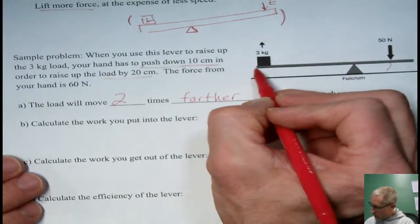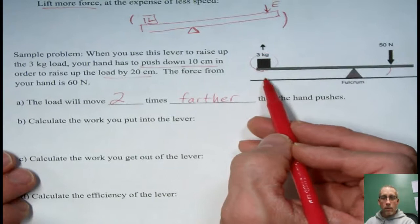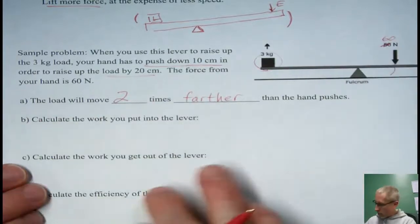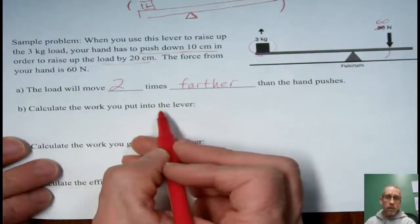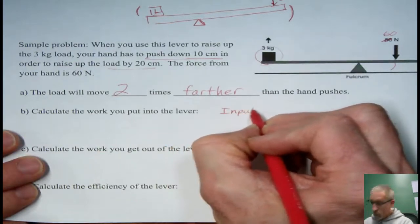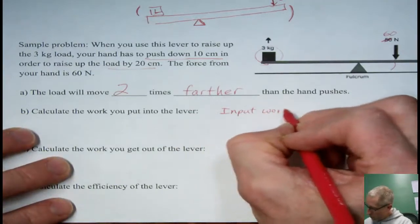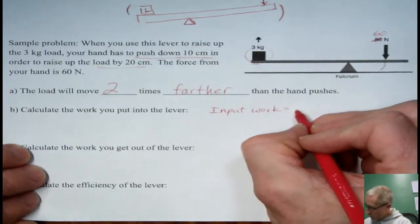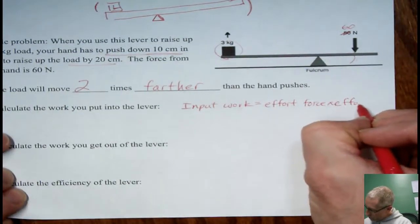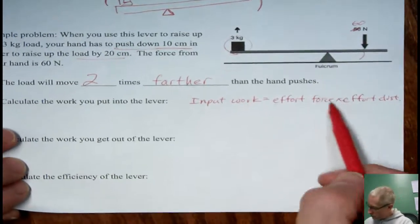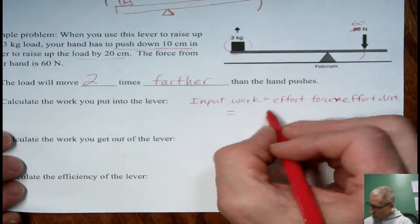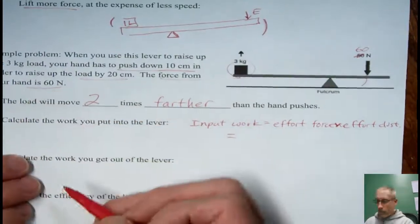And then with the other information for example I tell you that this is a three kilogram load and that the force from the hand is 60 newtons. I wrote 50 that should say 60 on my copy. Your copy probably looks right. So let's calculate the work that we put into the lever. So this is what we call the input work. And remember we always write in symbols or in words before we do a calculation what we're doing. That way I know that you know what you're doing. So the input work is what the hand is doing. This is the effort force times the effort distance.